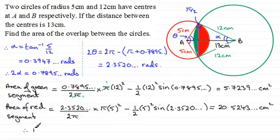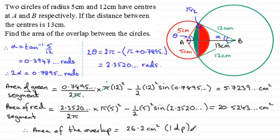So therefore, the area of the overlap, if you add these two together and round to say one decimal place, it's 26.2 centimeter squares to one decimal place. Okay, so I hope you were able to get that one. And if you did, well done. If not, hopefully you've been able to see where you've gone wrong.